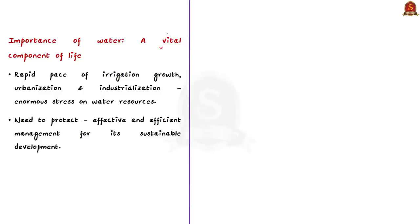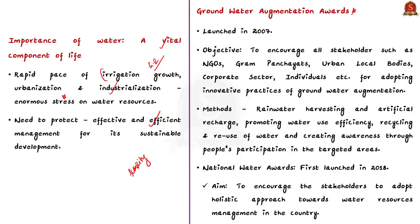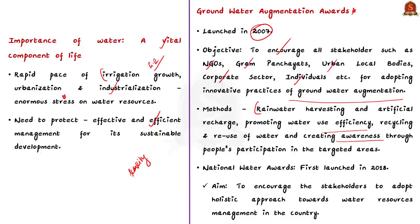Water is one of the vital components of life. In recent decades, due to rapid pace of irrigation growth after the Green Revolution, and then urbanization and industrialization, enormous stress has been put on water resources, leading to water scarcity in many regions. It is necessary that this scarce resource is protected by efficient management using sound scientific methodology for sustainable development. The first step was launching Groundwater Augmentation Awards in 2007, with the objective of encouraging all stakeholders — NGOs, Gram Panchayats, urban local bodies, corporate sector, and individuals — to adopt innovative practices for groundwater augmentation through rainwater harvesting, artificial recharge, promoting water use efficiency, recycling and reuse of water, and creating awareness through people's participation.